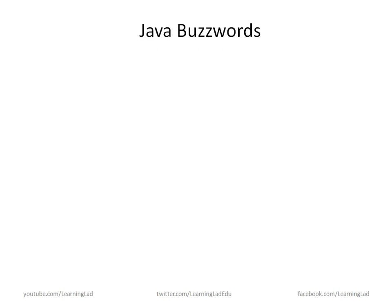Now we are going to see some Java buzzwords. The first thing is Java is a simple programming language. Java was designed to be simple for professional programmers to learn and use efficiently. If you have experience in object-oriented programming languages such as C++ or PHP, you will find Java very easy. The next thing is Java is an object-oriented programming language, which means we use classes, objects, and the features of the object-oriented approach. Everything is an object in Java.